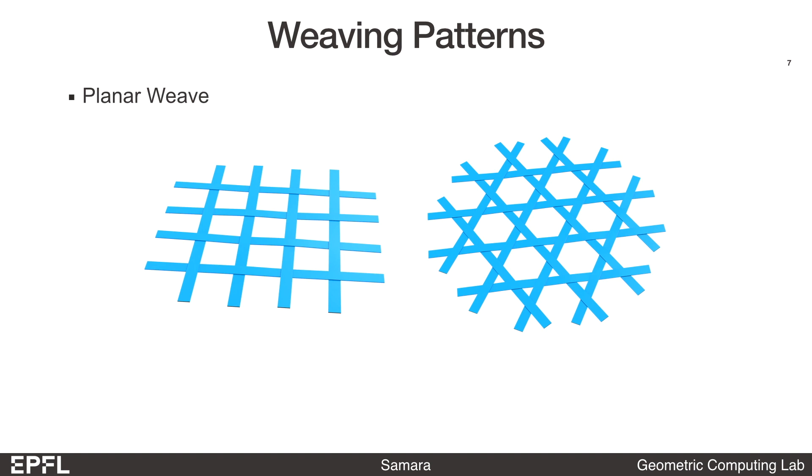With the regular pattern, the weave can be deformed as a developable surface. But to obtain non-zero Gaussian curvature, we need to deviate from the regular pattern.